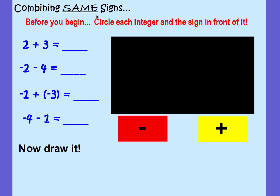Make sure that you're filling out your notes and doing the examples with me. Pause the video if you need to so that you can keep caught up. First, we're going to talk about combining the same signs. One of the things we want you to get in the habit of doing is to circle each integer and the sign in front of it. This is going to help you identify whether it's a positive or negative number, and whether your numbers have the same signs or different signs.